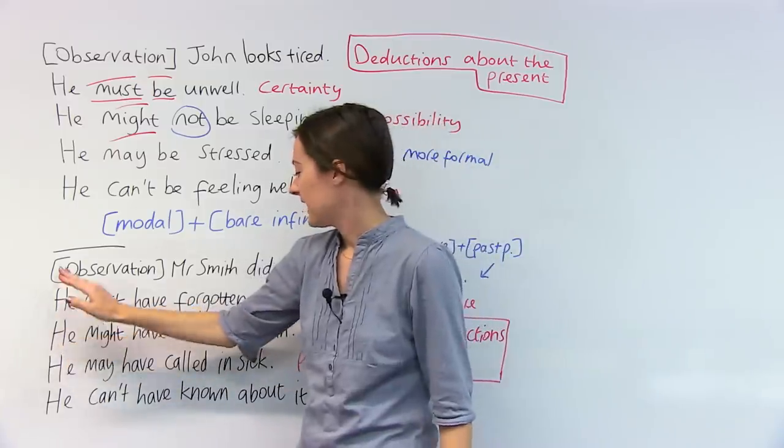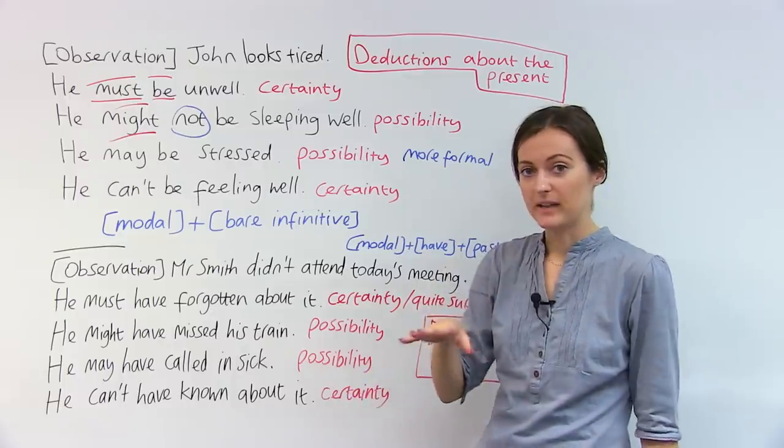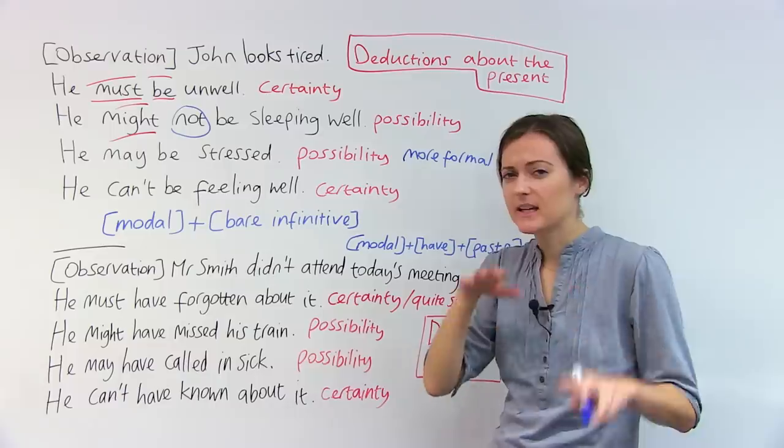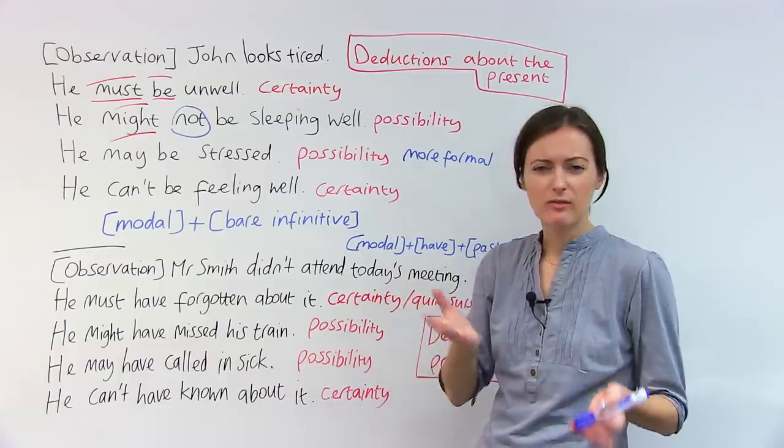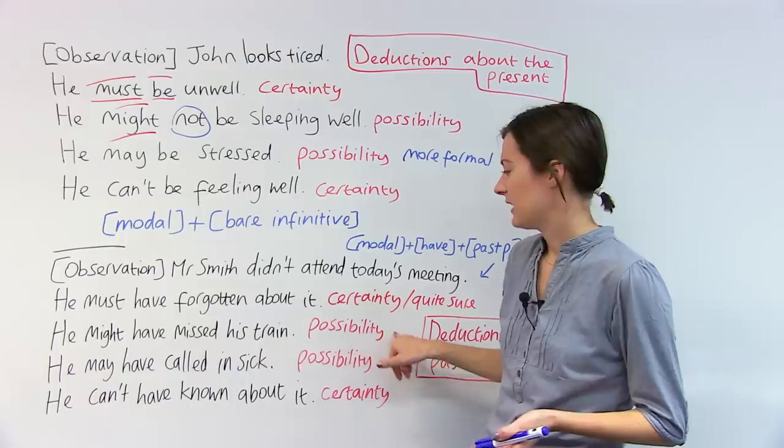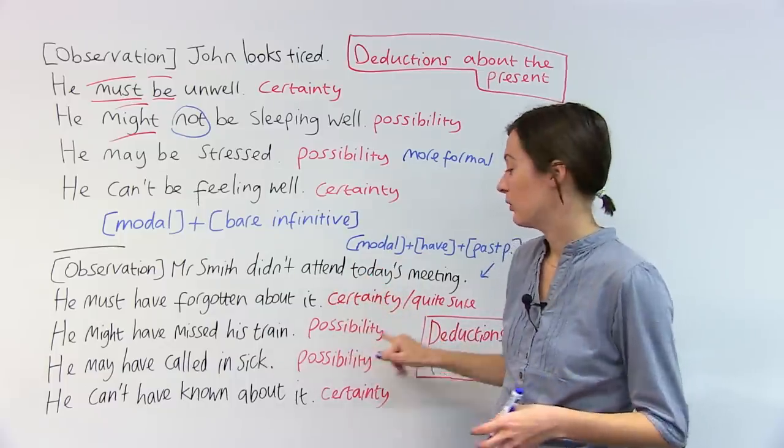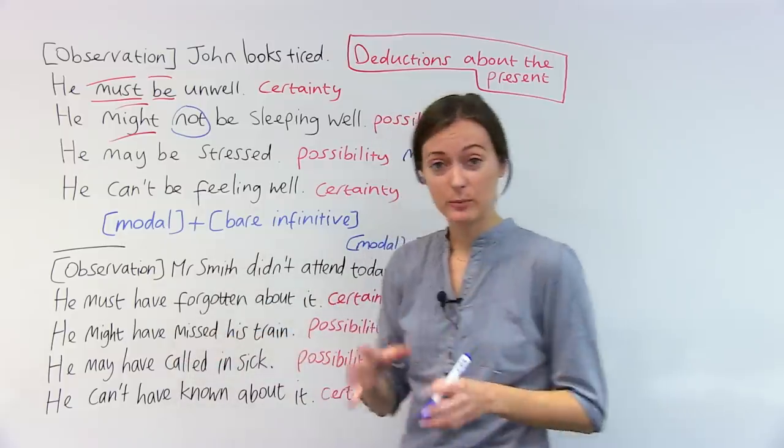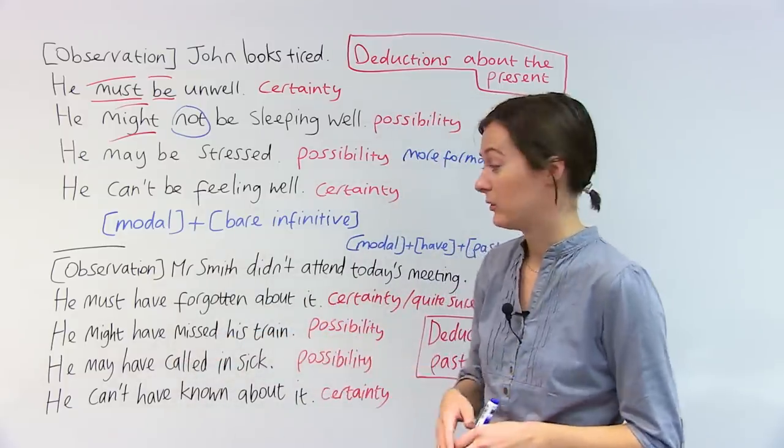What about this one? He might have missed his train to reflect possibility. You're not quite certain about it this time. You know Mr. Smith, he's generally a reliable guy. So you think that, you know, it must have been something outside of his control. It's possible that he didn't come to the meeting because he didn't manage to get his train on time.